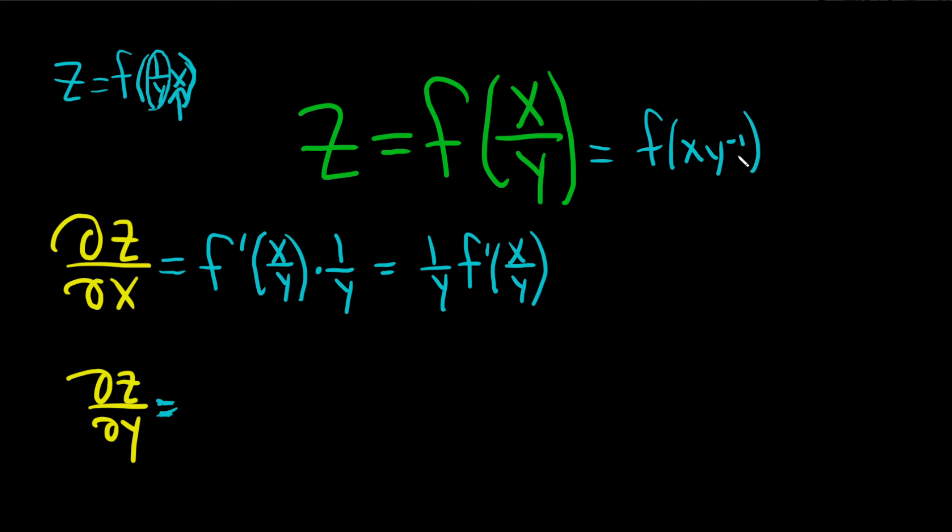You see, that way you can differentiate the y a little more easily, because if it's on the bottom, it's a little bit harder to use the power rule. So bring it up. So take the derivative of f, leave the inside untouched, and then times the derivative of your inside, which is this. The x is a constant because you're differentiating with respect to y. So you bring down the negative, and you get x, y to the negative 2.